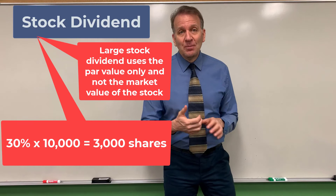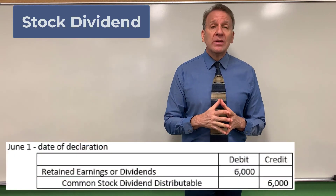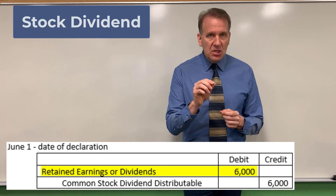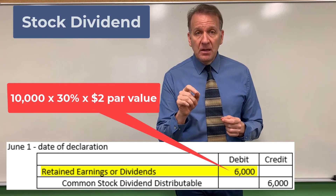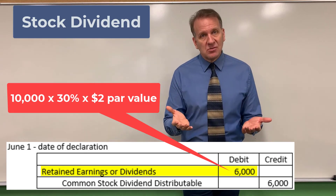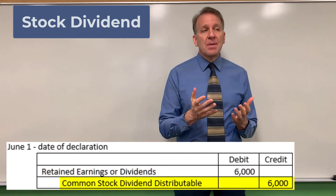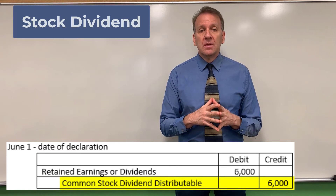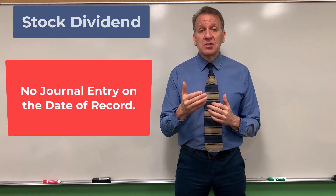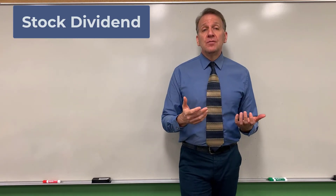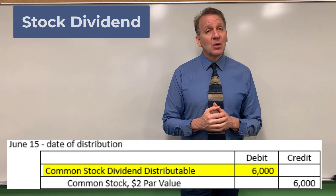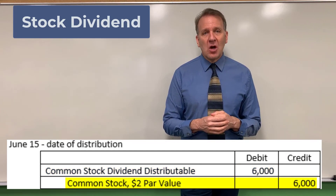This actually makes the entry easier. On the date of declaration, June 1st, we debit retained earnings or dividends $6,000 — that's 3,000 shares times $2 par value per share. Our credit is to common stock dividend distributable for $6,000. On the date of record, no journal entry — we just identify who owned the stock. Then on June 15th, the date of distribution, we debit common stock dividend distributable $6,000 and credit common stock $2 par value for $6,000, because now those shares have been issued.